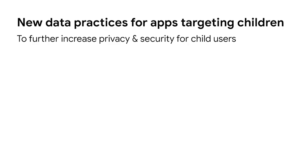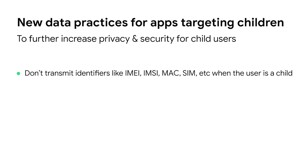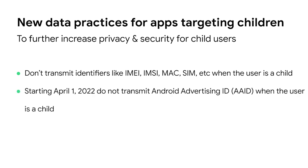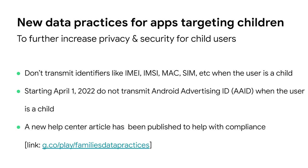This might be a good time to remind apps targeting children that the data practices section of the Families policy was recently updated. When it comes to identifiers, it's always best to use resettable IDs, and now this update prohibits the use of certain device identifiers. Starting April 1, 2022, apps targeting children must not transmit the Android Advertising ID when the user is a child or of unknown age. Take a look at our new Help Center article to help with your compliance efforts.